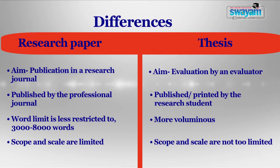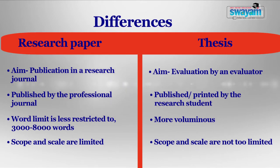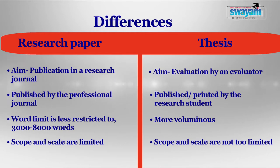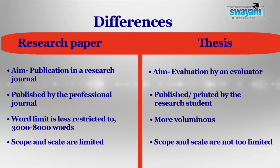A research paper is usually restricted to approximately 3,000 to 8,000 words, as specified by the professional journal in which we intend to publish it, while a thesis is more voluminous and vast. A research paper is submitted to a professional journal and if accepted is published by it, while a thesis is prepared and published by the researcher himself or herself as per the university's protocol and further submitted for evaluation.